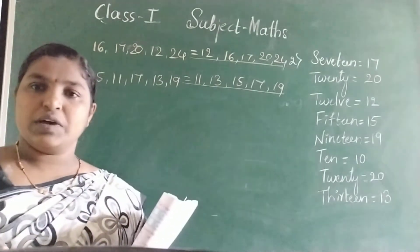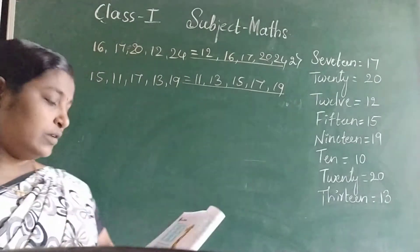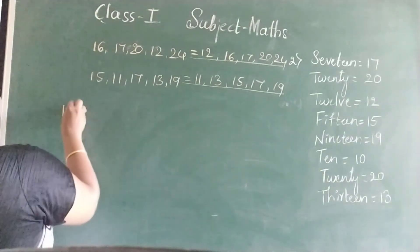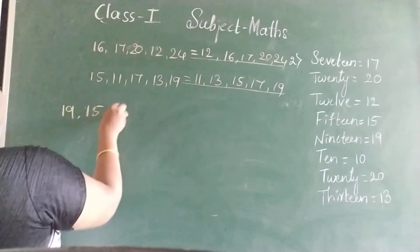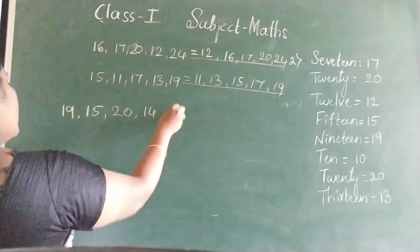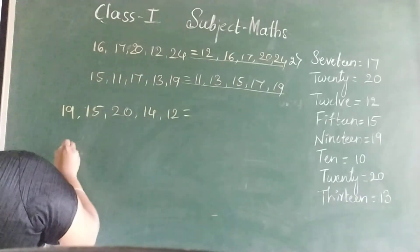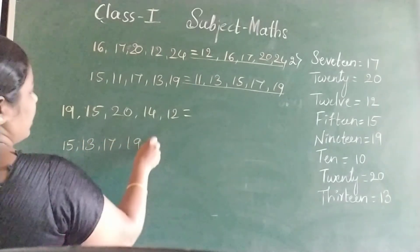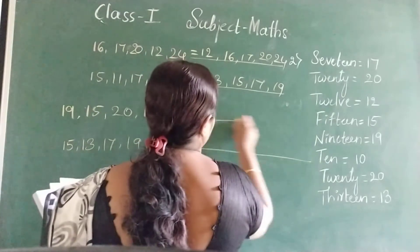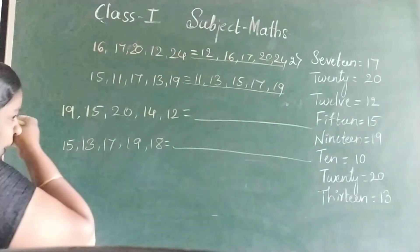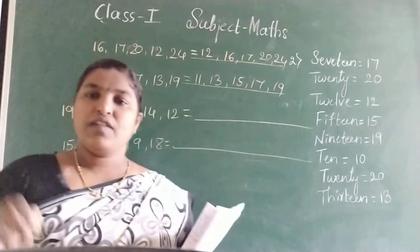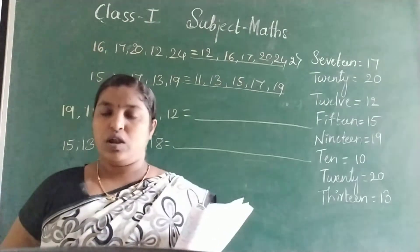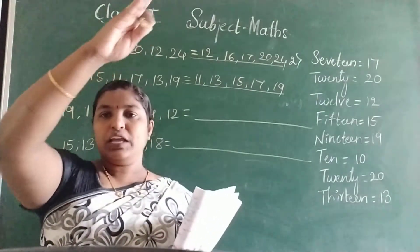Now write the following numbers in descending order. 19, 15, 20, 14, 12. 15, 13, 17, 19, 18. Descending means opposite of ascending. How to write the numbers? Big to small. Descending means writing numbers from big to small.